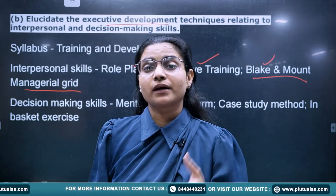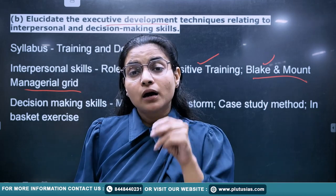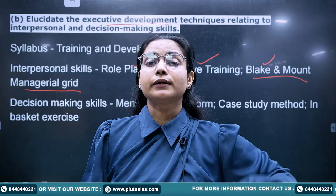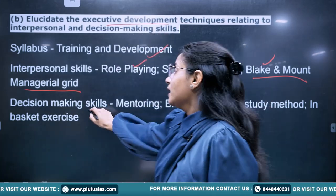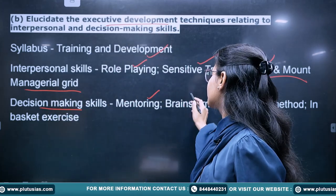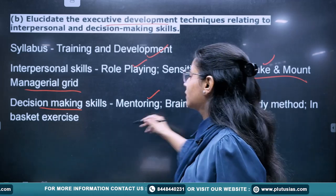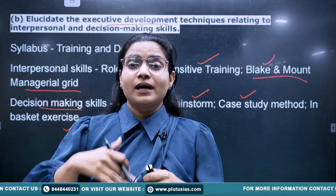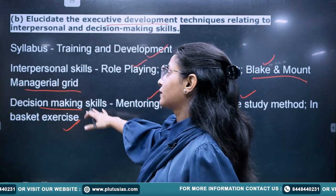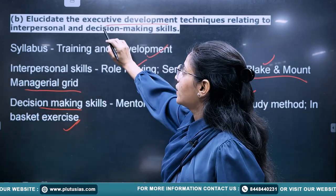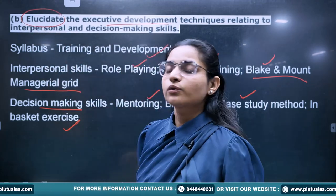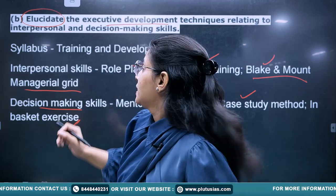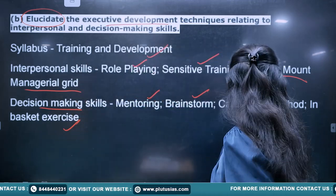This is how you prepare notes — think about which thinker to quote, such as the managerial grid from leadership theories. For decision-making skills, techniques include mentoring, brainstorming, the case study method, and in-basket exercises. You will cover all of this when reading HRM training methods. Since the word 'elucidate' is used, write briefly about each training method and mention positives or negatives.